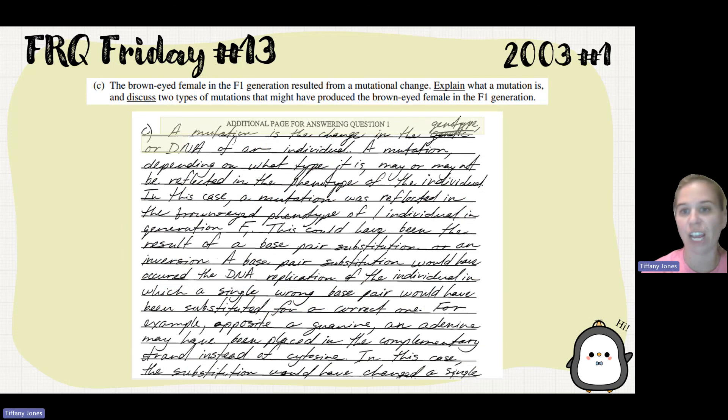So the student went on and they had this big, long response. Mutation is a change in the genotype or the DNA of an individual. Mutation, depending on what type it is, may or may not be reflected in the phenotype of the individual. In this case, mutation was reflected in the brown-eyed phenotype of one individual in the generation F1. This could have been the result of base pair substitution or an inversion.